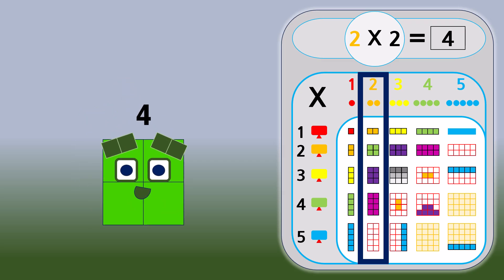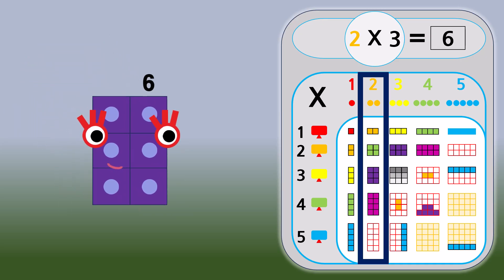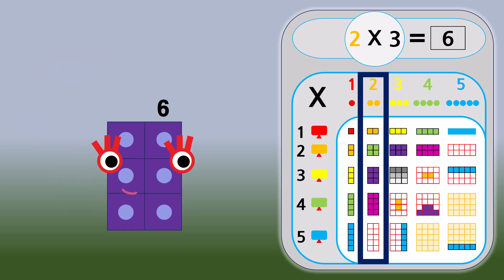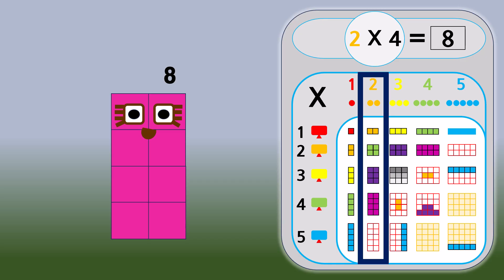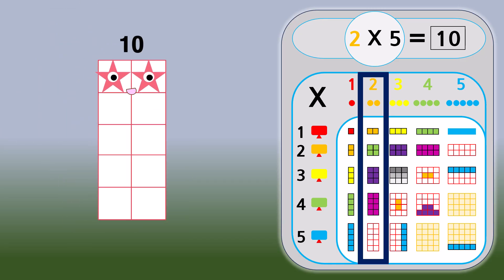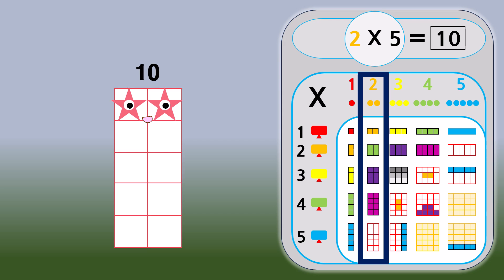2 times 2 equals 4. 2 times 3 equals 6. 2 times 4 equals 8. 2 times 5 equals 10.